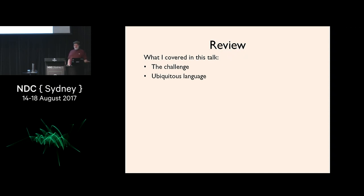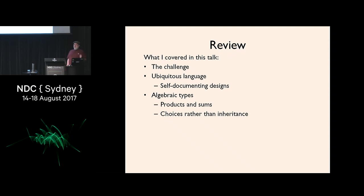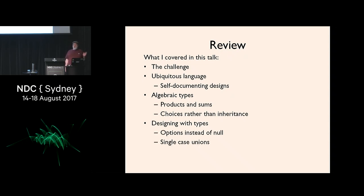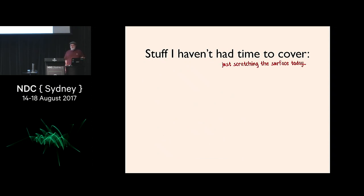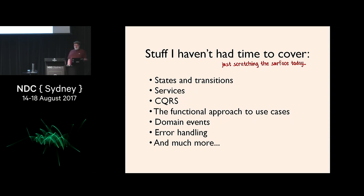So let's look at what we covered: the original challenge, ubiquitous language and self-documenting design, algebraic types — the concepts are really pretty straightforward. Using choices rather than inheritance is a powerful modeling tool; we used it over and over. Designing types: don't use null, use options. Use single-case union types to wrap things. Make illegal states unrepresentable. There's lots more I haven't had time to cover — state machines and state transitions, CQRS — but I have other talks on those topics.